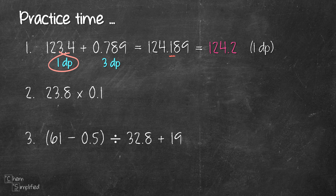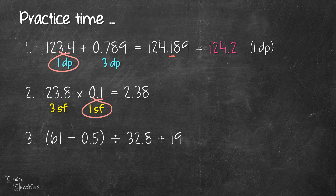The second question is a multiplication question. For multiplication, we round off following the lowest sig fig. We need to figure out the sig fig for each number: 23.8 has three sig figs, and 0.1 has one sig fig. That means our final answer is going to be in one sig fig. We multiply these two numbers and get 2.38. To round off to one sig fig, we look at the digit to the right of 2. Since it's a 3, which is less than 5, we don't need to round up. The final answer is 2 in one sig fig.